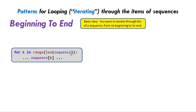You have a for loop with a variable k that goes in range of the length of the sequence. So if the sequence has 10 elements in it, the range statement would make k go 0, 1, 2, 3, 4, up to but not including 10. And then in the body of the loop, you refer to sequence bracket k — meaning sequence 0 the first time through the loop, sequence 1, sequence 2, etc., through sequence 9 in our example of a 10-item sequence.